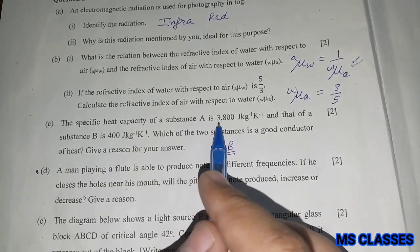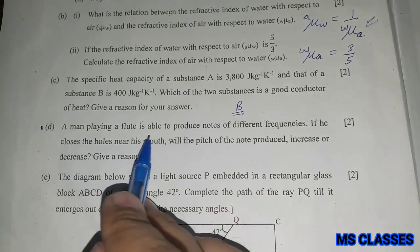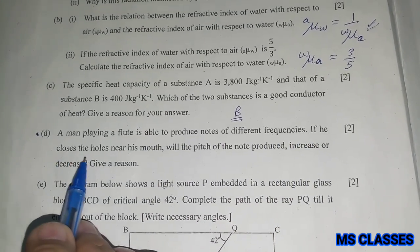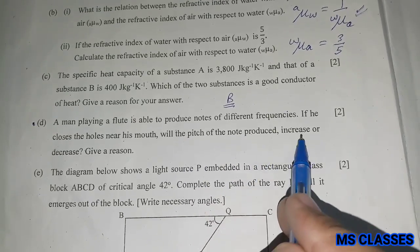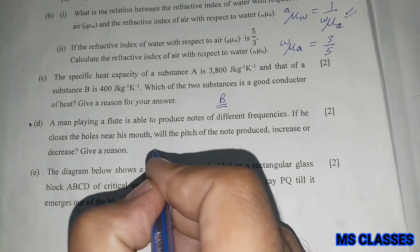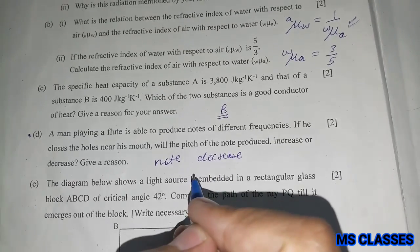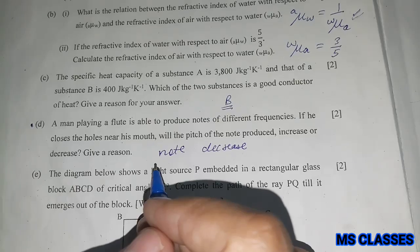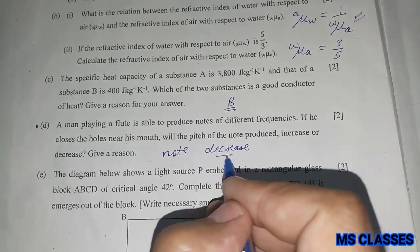A man playing a flute is able to produce notes of different frequencies. If he closes the holes near his mouth, will the pitch of the note produced increase or decrease? The note will decrease. Give a reason. Because as he closes more holes, the length of the vibrating air column increases, hence the note will decrease.